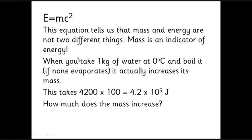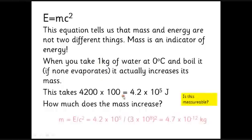For example, if you take a kilogram of water at 0°C and you boil it — even in a sealed container so none evaporates — you've put in 4,200 joules to make one kilogram one degree hotter, so 100 times that to make it 100°C hotter: 4.2 × 10⁵ joules. Even if it starts as exactly one kilogram, its mass will increase according to m = E/c². With c = 3 × 10⁸ m/s, the mass increases by 4.7 × 10⁻¹² kilograms.